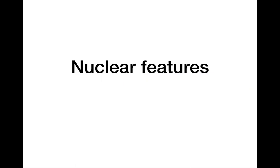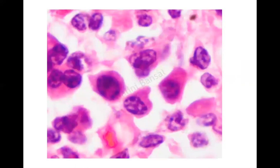The first thing that we should look at in any cell are the nuclear features — how the nucleus looks, whether it is hypochromatic, vesicular, or salt and pepper. These are the different nuclear features which are characterized. Before we move on to describe these features, the first thing we should understand about hypochromasia and vesicular nuclei is to look at a plasma cell.